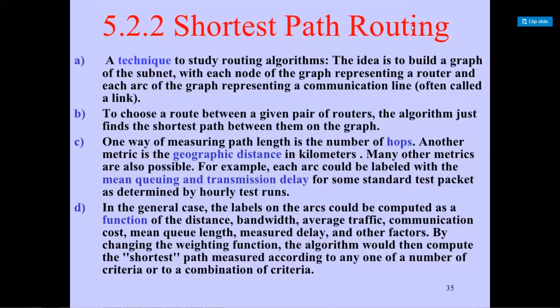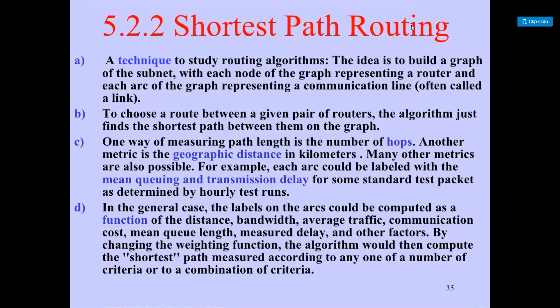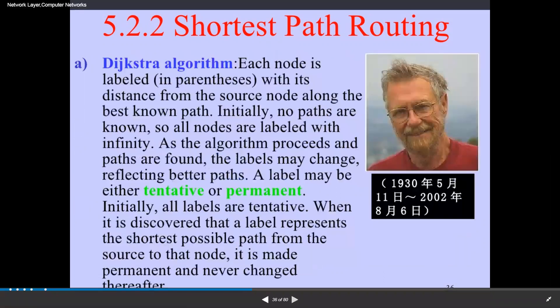Good morning students. In routing algorithms, the first algorithm is the shortest path routing algorithm. In this algorithm, in a graph or a subnet, each node of the graph or subnet represents a router and each arc of the graph represents the communication line. In this example of shortest path routing algorithm, we need to find out the shortest possible distance from source to destination. The algorithm is Dijkstra's shortest path routing algorithm.